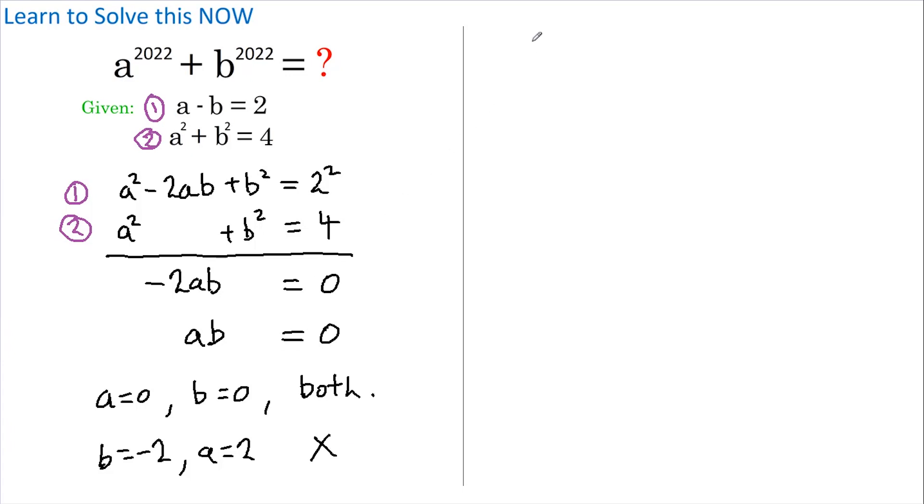So we've now proved that if a equals 0, then b equals negative 2, or if b equals 0, then a equals 2.